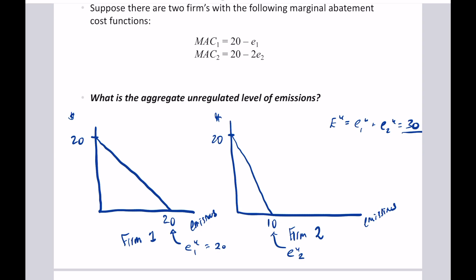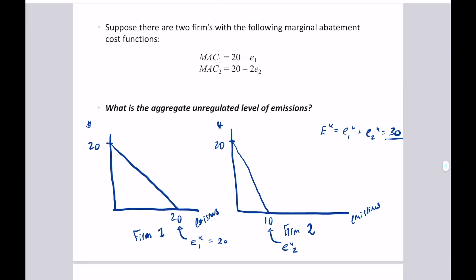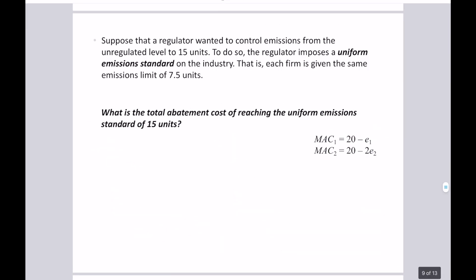This provides a baseline — now we're going to clean up our act and reduce emissions by some level. Suppose the regulator wants to control emissions from the unregulated level of 30 down to 15 units. To do so, the regulator imposes a uniform emission standard command and control policy: each firm is given the same emissions limit of 7.5 units. Assuming they comply, the aggregate will be 15 units. The question is: what's the total abatement cost of reaching this uniform emission standard?